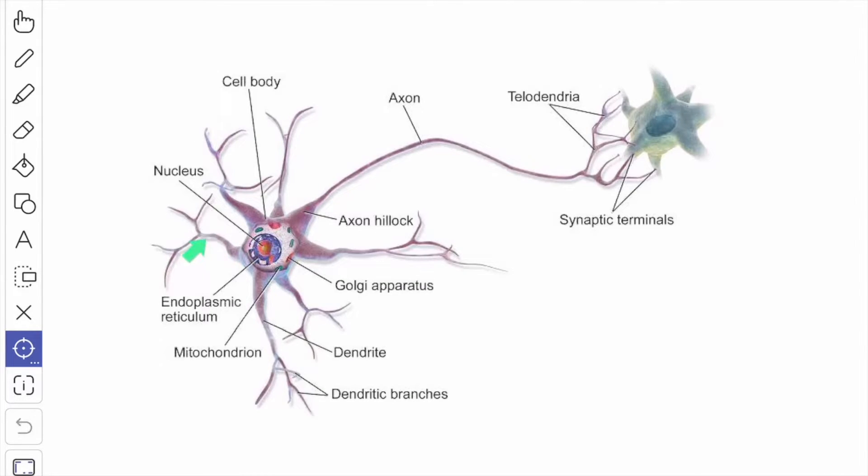We will see about the dendrites. The dendrites or the cytoplasmic extensions of the cell body, one or more in number, contain the Nissl body, mitochondria, neurofilaments, microtubules, and all the organelles of the cell body except the Golgi apparatus.